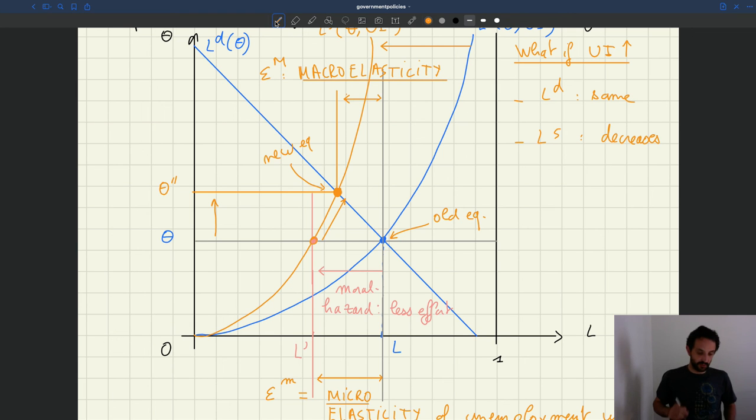And as you can see in this picture, the macro-elasticity is less than the micro-elasticity. So that means that in practice, once you compare the old equilibrium to the new equilibrium, the increase in unemployment is not as big as what you would have thought keeping tightness constant. The reason is that tightness actually goes up in equilibrium.